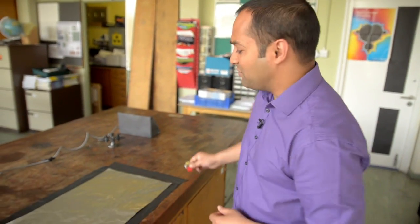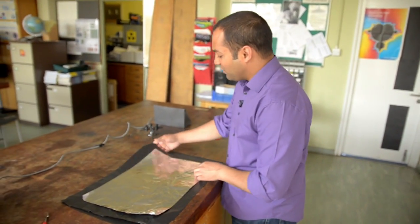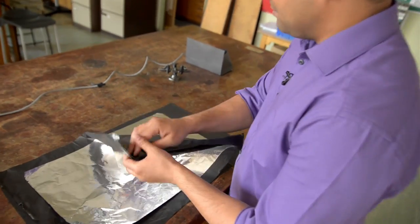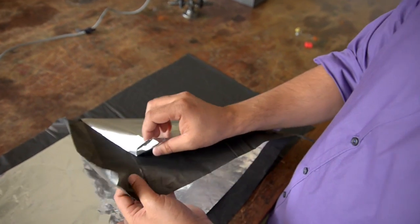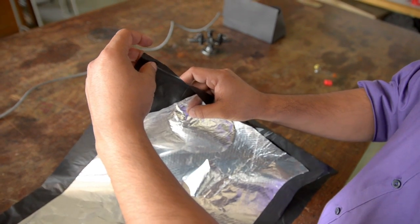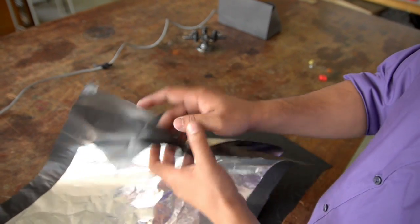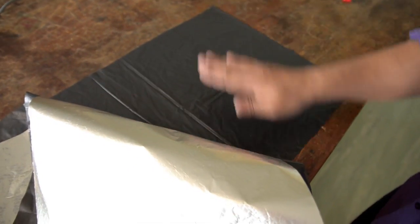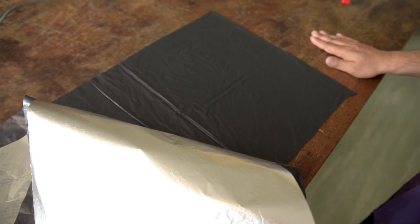You can introduce the topic of capacitors to your students using this large-scale model. What I've got here is two bits of foil for the plates, separated by this thin sheet of plastic that I've cut from a bin bag for the dielectric. The whole thing's resting on this other sheet of plastic to keep it insulated from the bench.